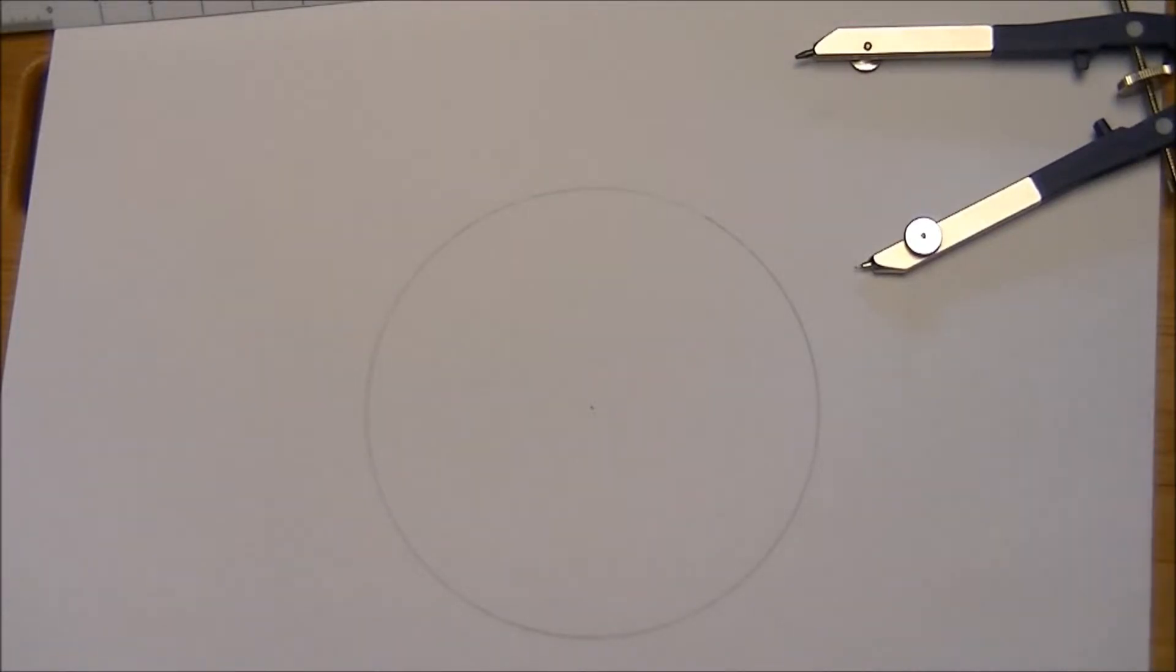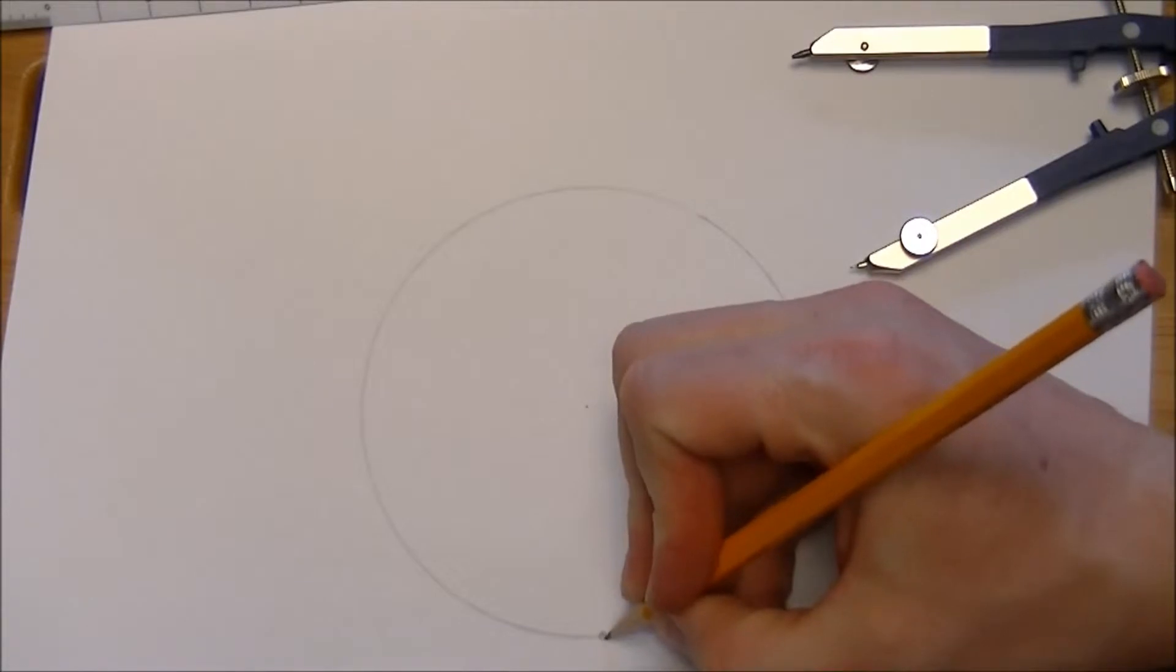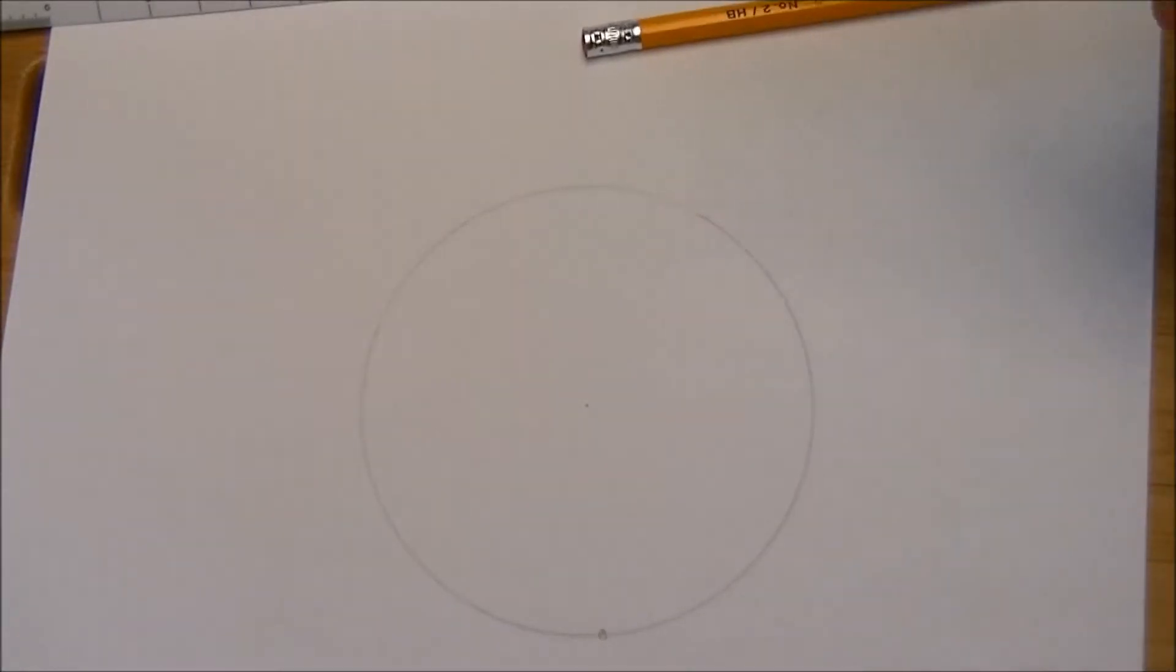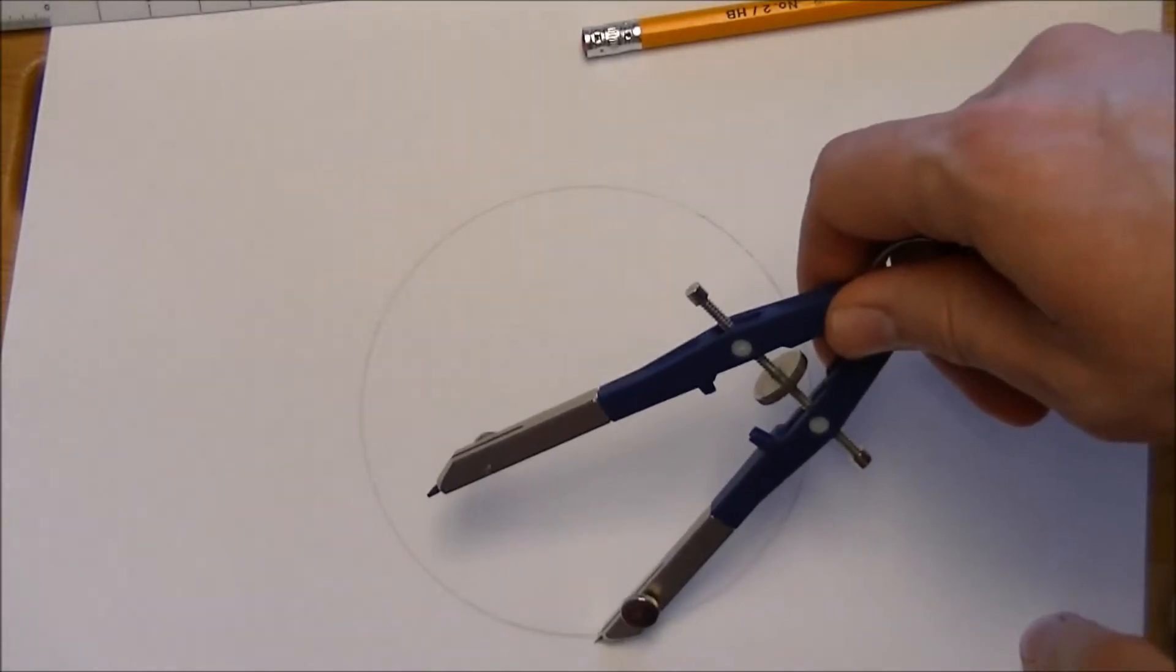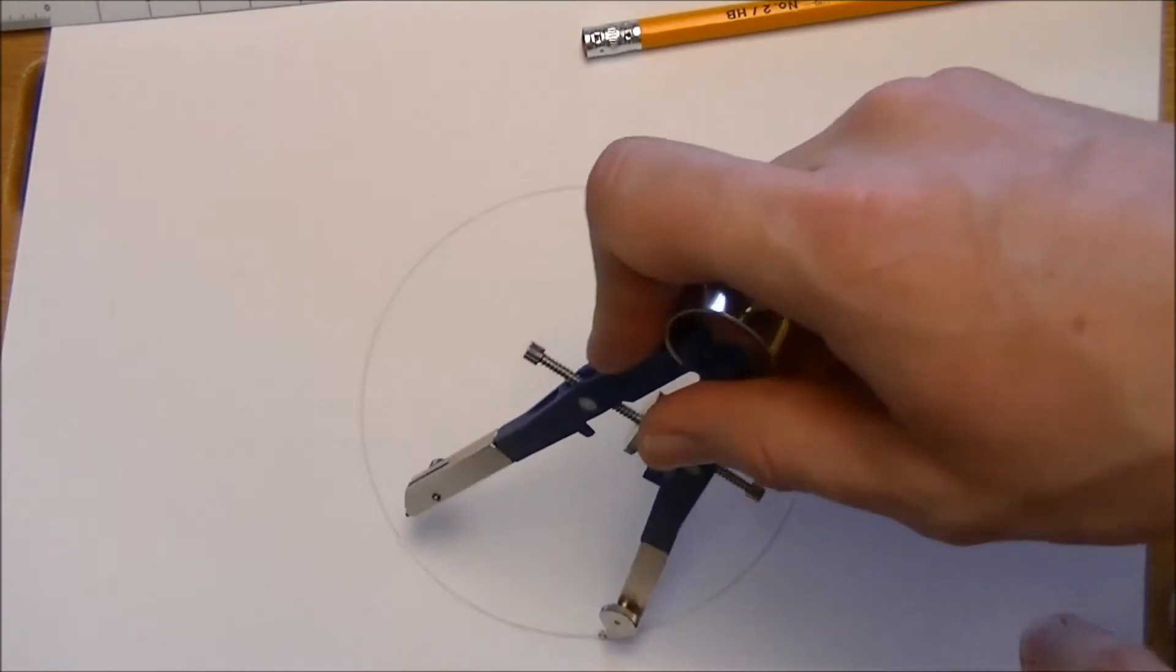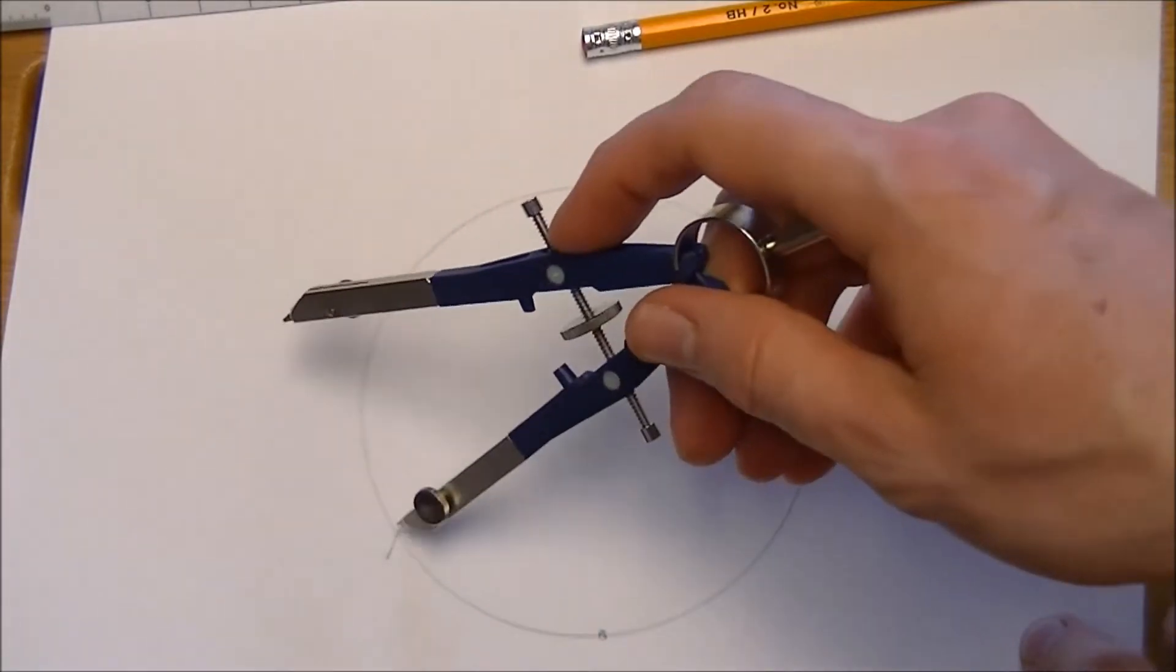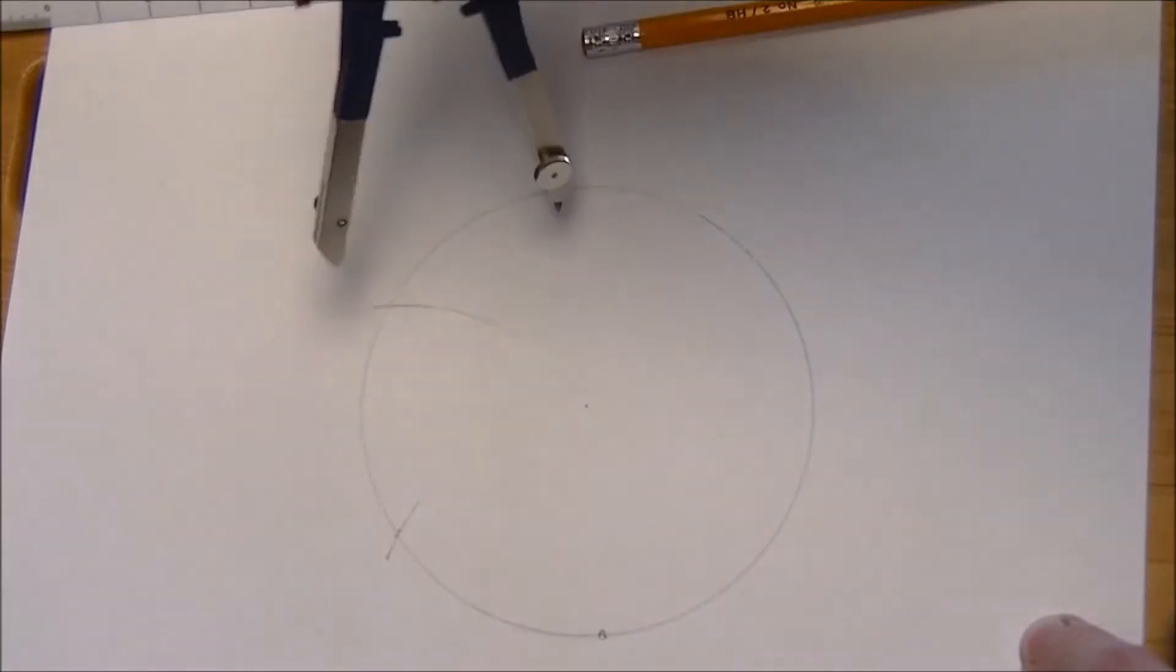So with a hexagon, fortunately hexagons are a neat one where the radius is actually the length of the side. So we can take the radius, that same radius that we used, mark any point on the circle, and just work our way around. One, one side will be that length, the next side will be that length,